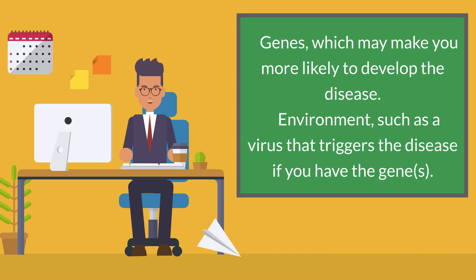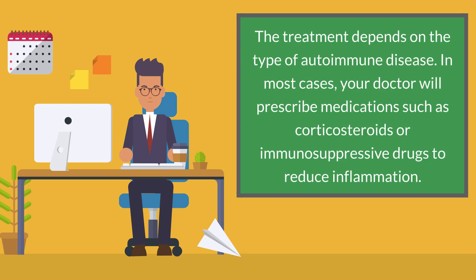Environment, such as a virus, that triggers the disease if you have the genes. The treatment depends on the type of autoimmune disease. In most cases, your doctor will prescribe medications such as corticosteroids or immunosuppressive drugs to reduce inflammation.